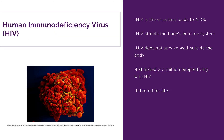HIV: HIV is the virus that leads to AIDS. HIV affects the body's immune system and does not survive well outside the body. An estimated 1.1 million people are living with HIV, and those infected are infected for life.